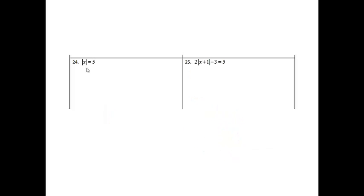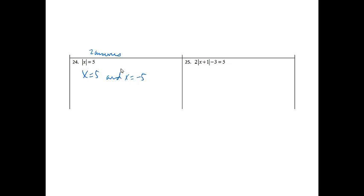Problem 24, absolute value of x equals 5. I know with absolute values, I should expect most of the time to get 2 answers, so I'm going to get x equals 5 and x equals negative 5. Simple as that, because the absolute value of negative 5 is 5.